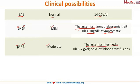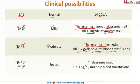In thalassemia intermedia, the patient may require occasional blood transfusions. Whenever there is partial or no beta chain synthesis, it is a severe condition called thalassemia major, with hemoglobin concentration less than 6 gram per deciliter. In this condition, the patient may require multiple blood transfusions.